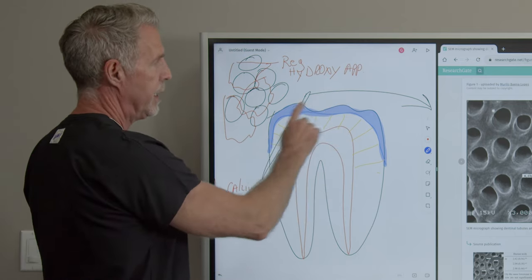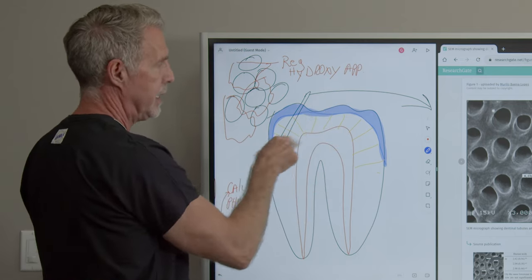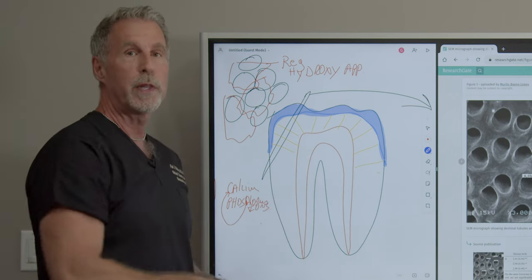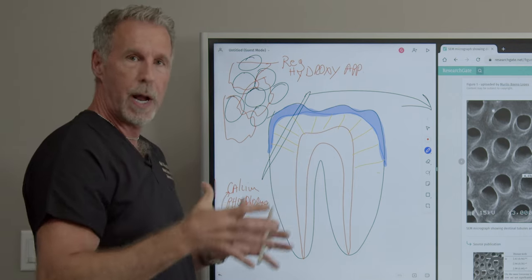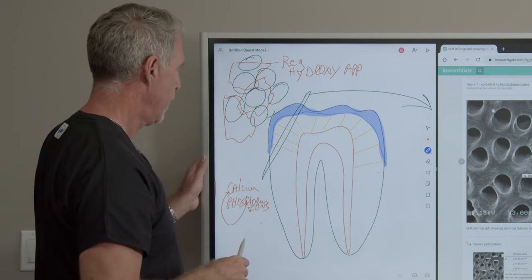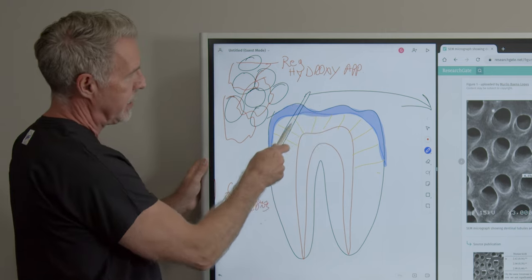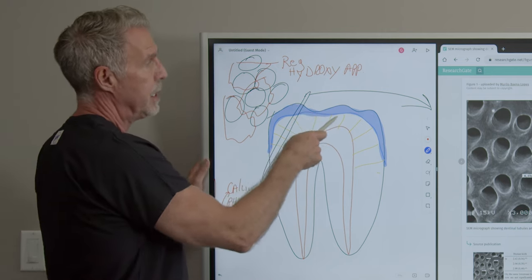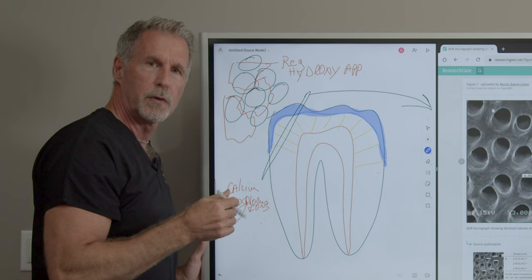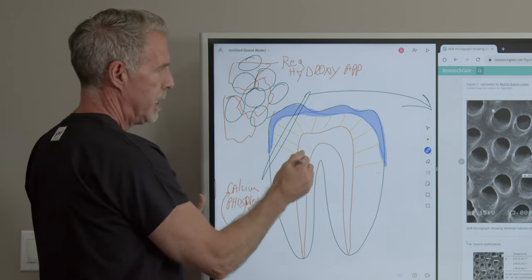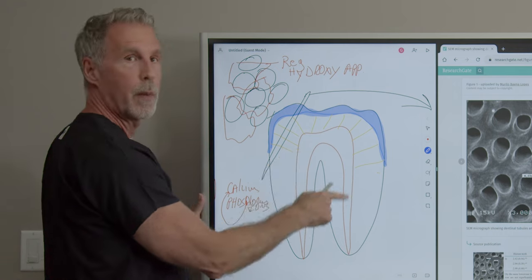We have the enamel, we have the dentin on the inside, we have the pulp and the root, and it's all housed within a bony structure with gum around it to keep it healthy. Now, if we take a cross-section of this dentin, it's actually filled with millions and millions of these little tubules. The tubules are filled with an organic matrix of fluids that's pumped in and out through the pulp.